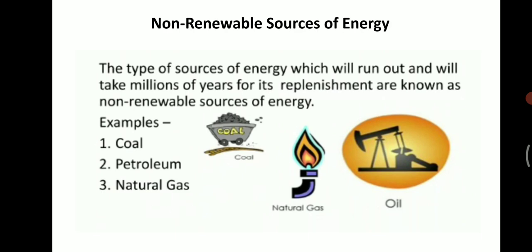Now, non-renewable sources of energy: the type of sources of energy which will run out and will take millions of years for their replenishment are known as non-renewable sources of energy. For their formation, millions of years are required. That's why they are called non-renewable sources of energy — they are going to be exhausted or finished. Examples are coal, petroleum, and natural gas.